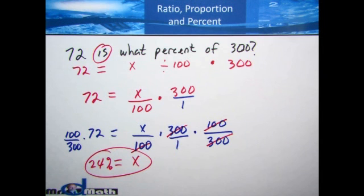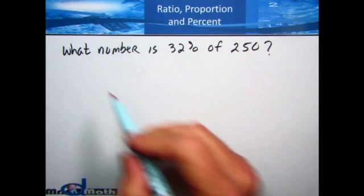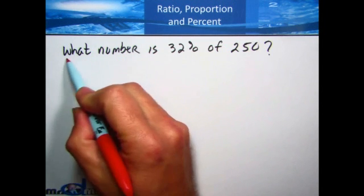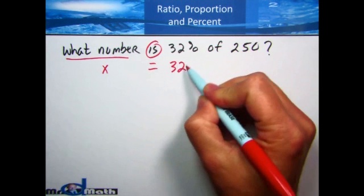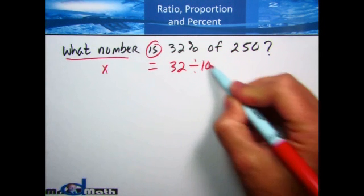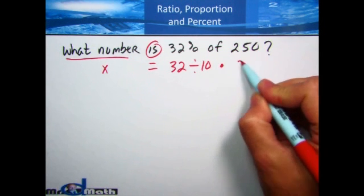When you're working on your coursework and you get to a problem like this, follow along, work one out, and see how to do this when you're looking for 'what percent.' Now let's take a look at another kind of problem where x will be in a different part of the problem. This time we see 'what number,' so 'what number' is going to be my x. 'Is' means equal. 32% means 32 divided by 100, then multiply by 250.